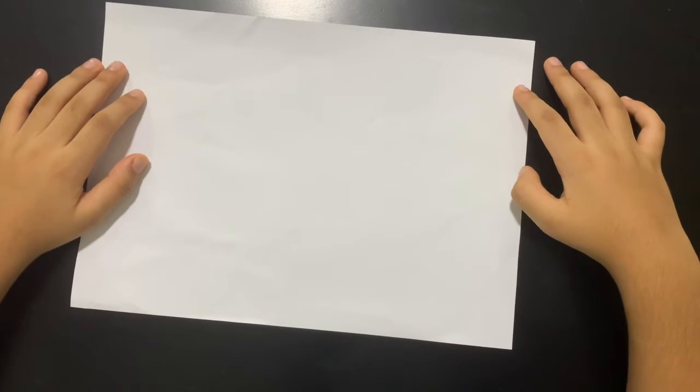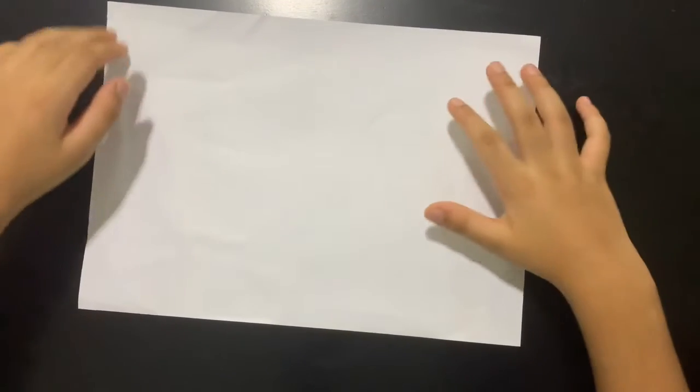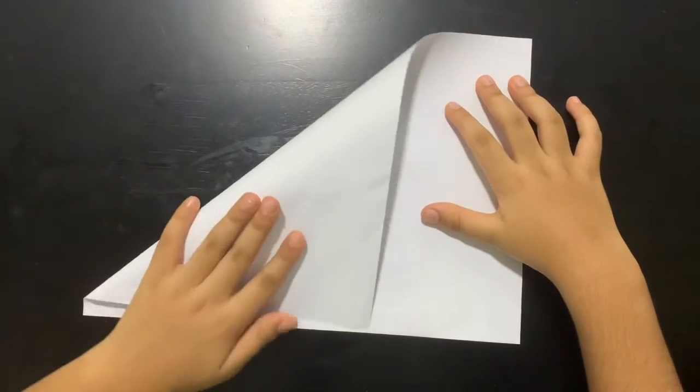So to make the tall cap, you need an origami paper. If you don't have origami paper, just use printer paper and make it into a square.